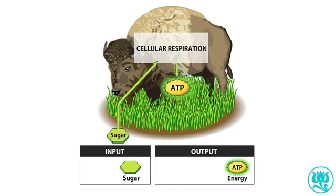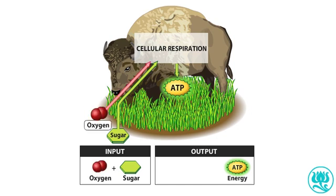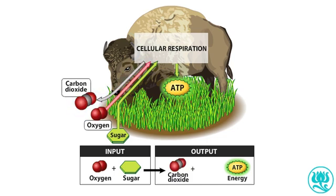This plentiful, readily available stored energy in ATP can then be used as needed to fuel the activities of the organism. Cellular respiration requires oxygen, which the animal inhales, and releases carbon dioxide, which the animal exhales. Water is also released during these reactions.